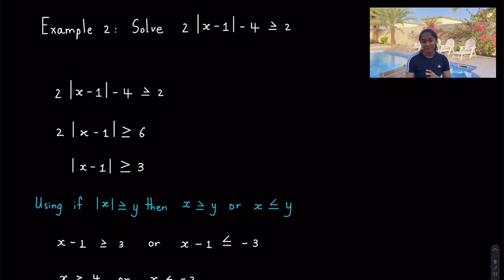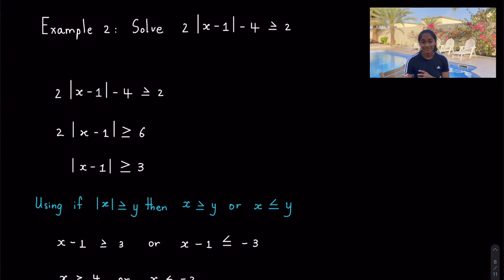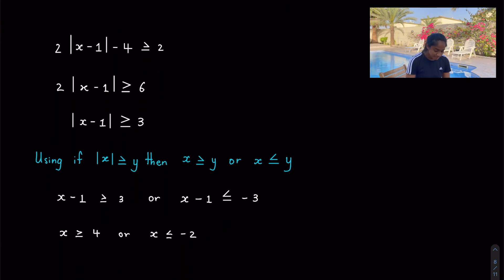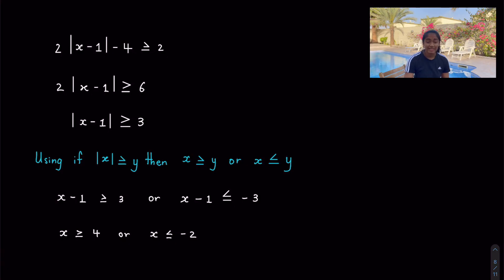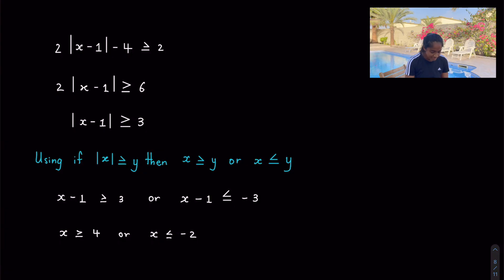Example 2: solve this inequality with a greater than or equal to sign. Simplify by moving the 4 over to get 6, then divide by 2. Now apply Rule 6: x is greater than or equal to y, or x is less than or equal to negative y. Simplify both cases — x is greater than or equal to 4, or x is less than or equal to minus 2. That's how we solve modulus inequalities.